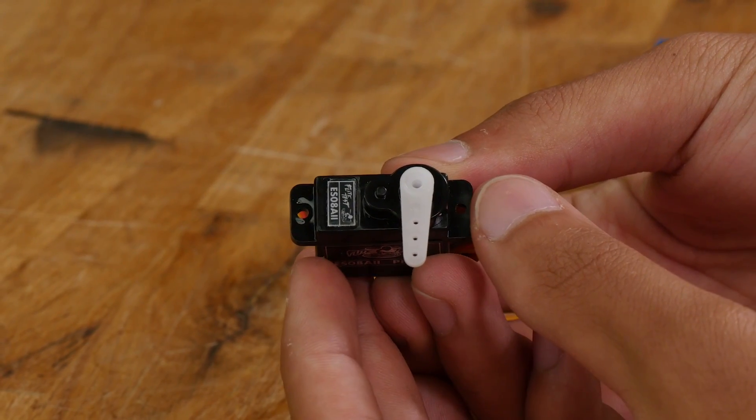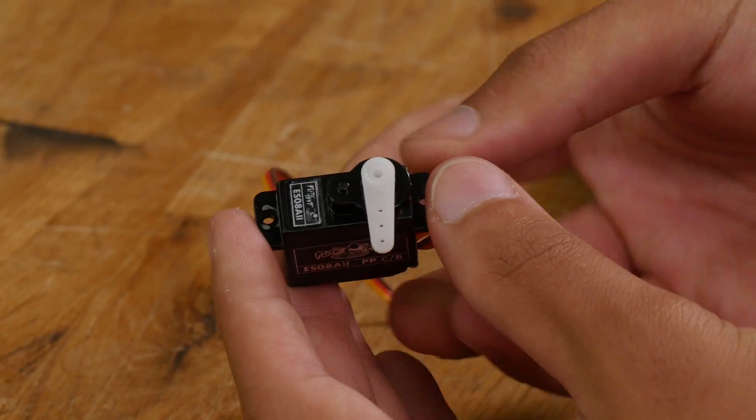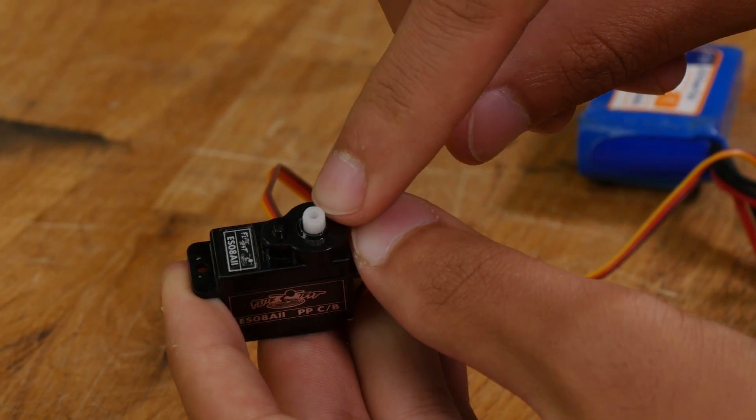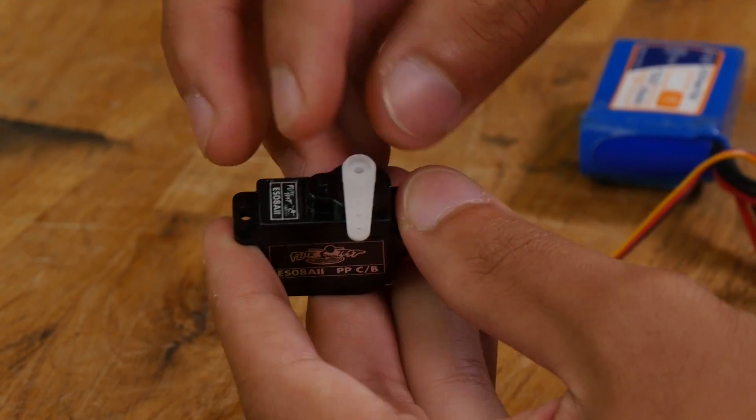As you can see, this servo arm isn't precisely at 90 degrees to the servo. This is because the servo has teeth on it. You can't get it exactly right at 90, but just put it as close as possible and you can sub-trim your way to 90.